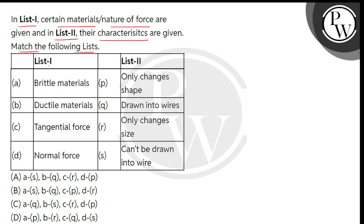So, children, given है हमें list 1 में कुछ materials या फिर nature of forces, और list 2 में उनकी characteristics से हमें match करना है। सबसे पहले list 1 में given है हमें A entry में brittle materials.